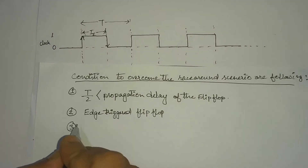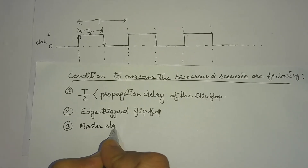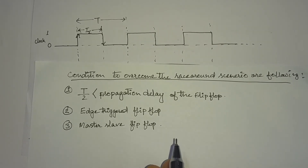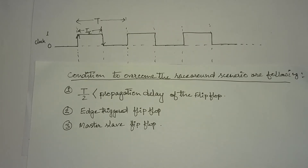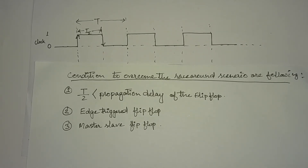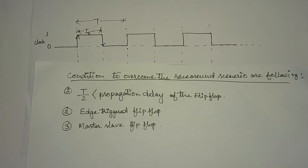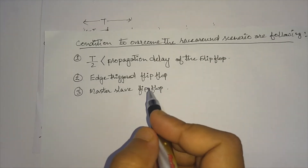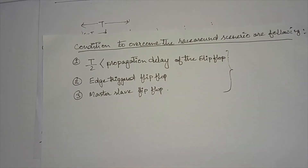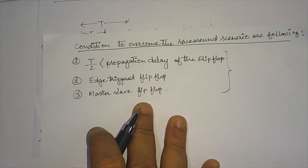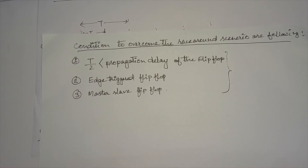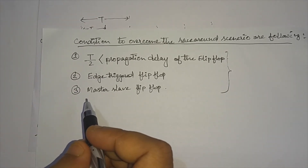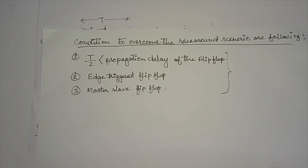The third case is a special one: the master-slave flip-flop. It is a special configuration with two stages, which we will cover in the next class as it is a bit more complex. So these are the three conditions — if any one of them is fulfilled, we can eliminate the race around condition and achieve proper functioning of the JK flip-flop.